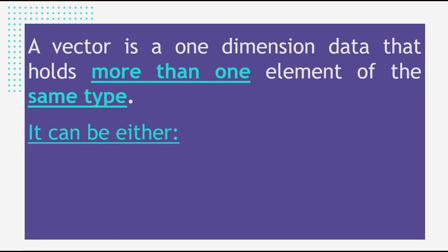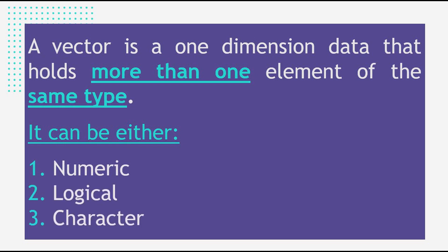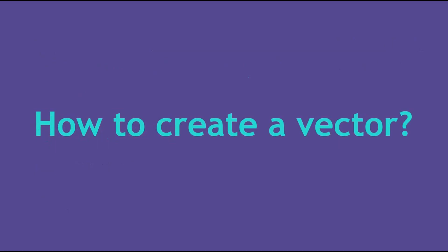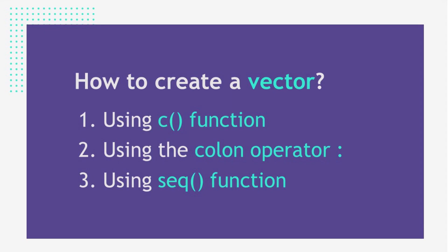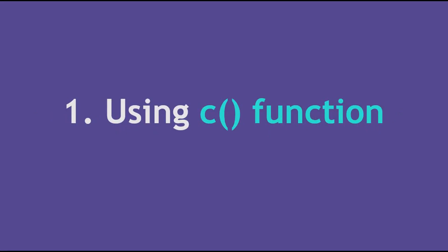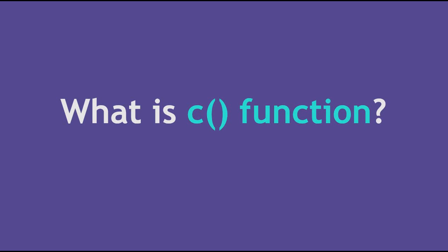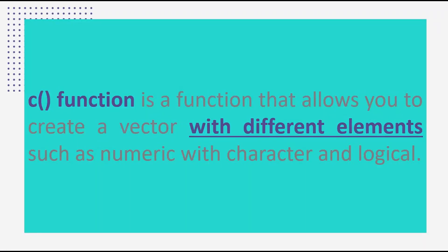A vector is one-dimensional data that holds more than one element of the same type. It can be numeric, logical, or character. To create a vector, we start with the c() function. The c() function allows you to create a vector with different elements, such as numeric, character, and logical values.